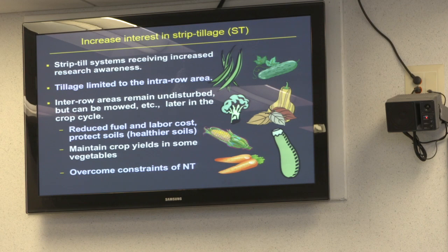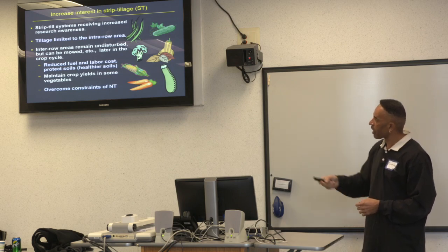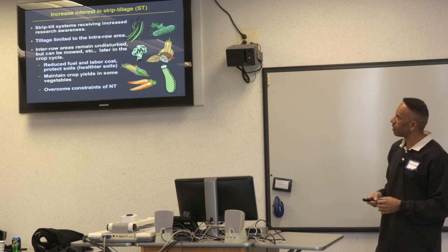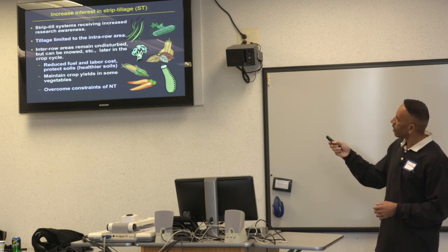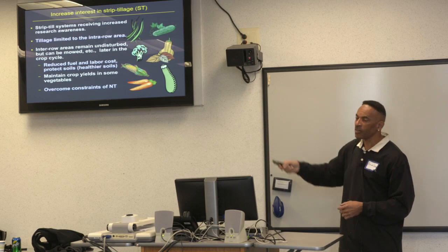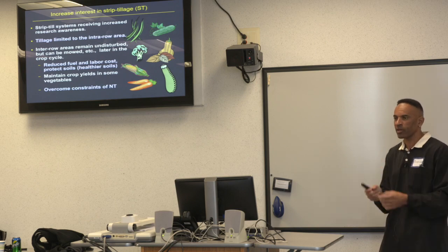There has been increased interest in strip tillage, which I consider a hybrid between no-till and conventional till. The idea is to only till in the area where you're going to place the crop row, with the rest remaining no-till. This technique overcomes many no-till constraints. Research has shown reduced fuel and labor costs, healthier soils, and maintained crop yields with beans, cucumbers, winter squash, summer squash, sweet corn, broccoli, and even carrots — because you're at least tilling where you'll plant.